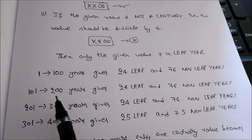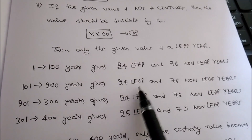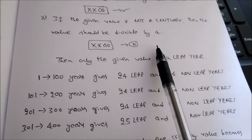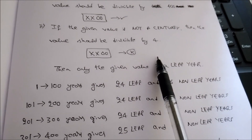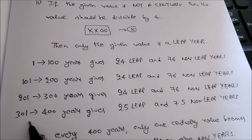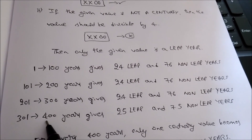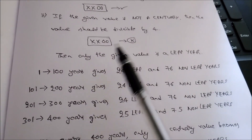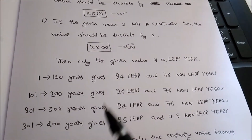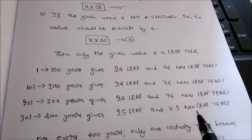From 101 to 200, there are 24 values divisible by 4 and 76 not divisible by 4 or 400, so 24 leap years and 76 non-leap years. Similarly, for 201 to 300, there are 24 leap years and 76 non-leap years. From 301 to 400, there are 25 leap years because 400 is divisible by 400, making it a leap year — so 24 plus 1 equals 25 leap years. The remaining 75 values are not divisible by 4 or 400, hence they are non-leap years.